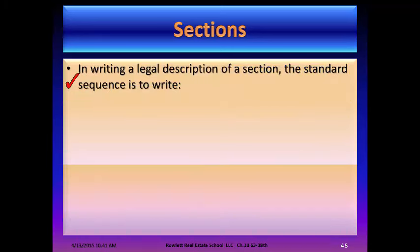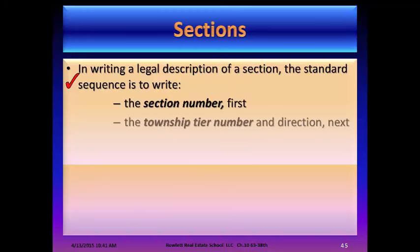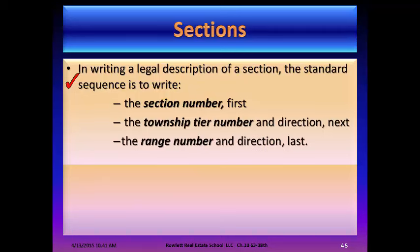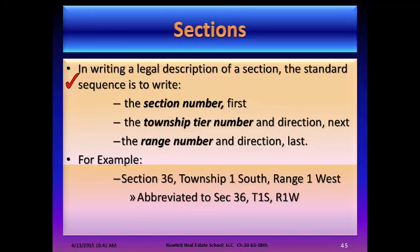In writing a legal description of a section, the standard sequence is to write the section number first, the township tier number and direction next, and the range number and direction last. For example: Section 36, Township 1 South, Range 1 West — abbreviated as Section 36, T1S, R1W.